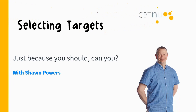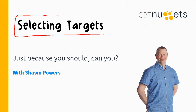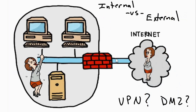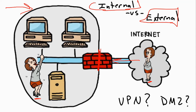It seems pretty simple, but when we're creating the scope for a penetration test, we need to understand what sorts of targets there are so that we can make sure the proper things are included in our scope. One of the first things you really need to think about is whether this is an internal attack or an external attack. With a firewall in place, the company is barricaded from the outside. This is something that's going to drastically change how you do your penetration test, so it must be included in the scope.